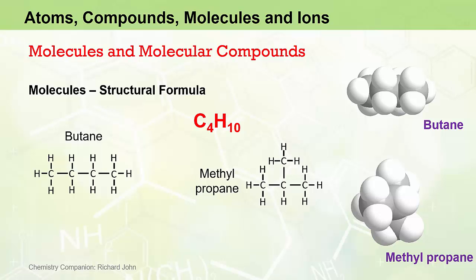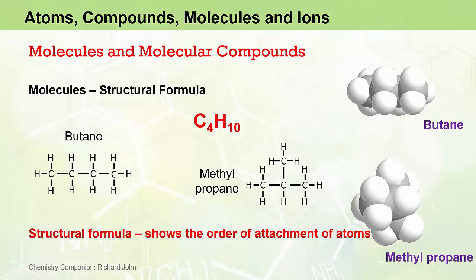The ten hydrogen atoms are again attached peripherally to the four carbon atoms. Clearly these two molecules have quite different structures and quite different orders of attachment of atoms, and that's exactly what structural formulas do — they provide more information with regard to the order of attachment of atoms. The downside to structural formulas is that they are more cumbersome to use and represent in, for example, chemical equations. So whether you use the molecular formula or the structural formula will depend on the situation and what type of information you wish to convey.